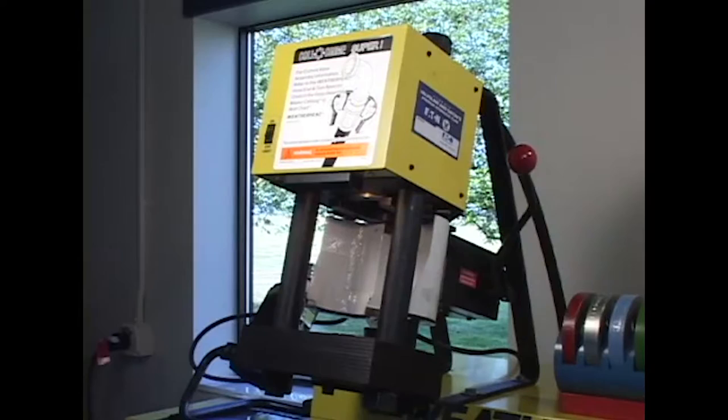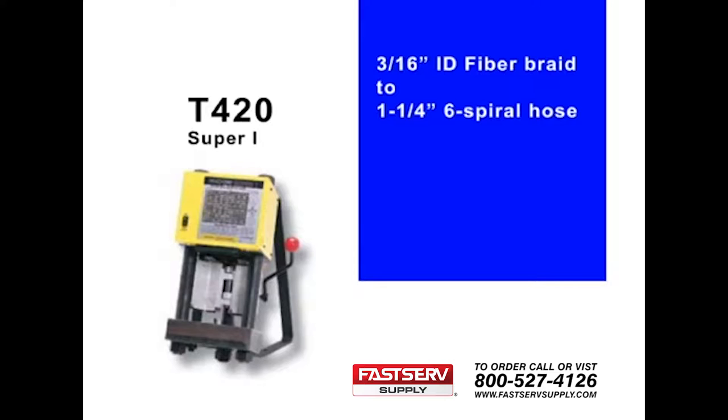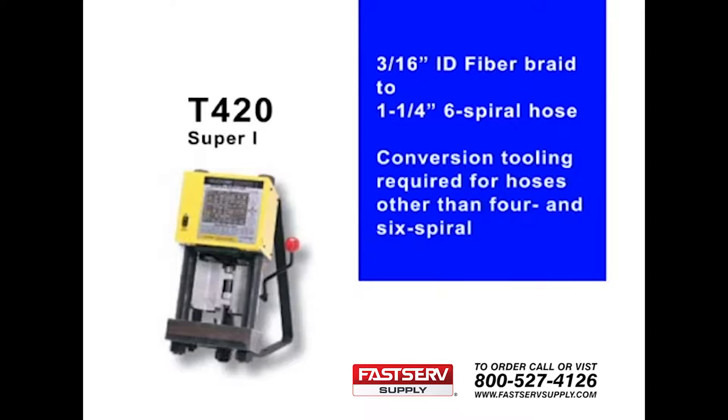The T420 ColoCrimp Super 1 offers crimping capabilities ranging from 3/16 inch I.D. fiber braid through 1 and 1 quarter inch 6 spiral hose. For hoses other than 4 and 6 spiral, conversion tooling is required. See the Eaton Weatherhead Master Catalog for details.